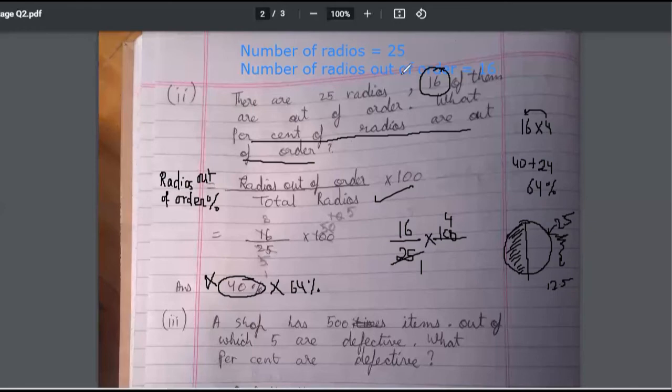Do you really think 16 is less than 12.5? Is it making sense to you? So out of 25 radios, 16 were not good. That means it is obvious it will be more than 50 percent. So that's why while doing calculation, just be careful.